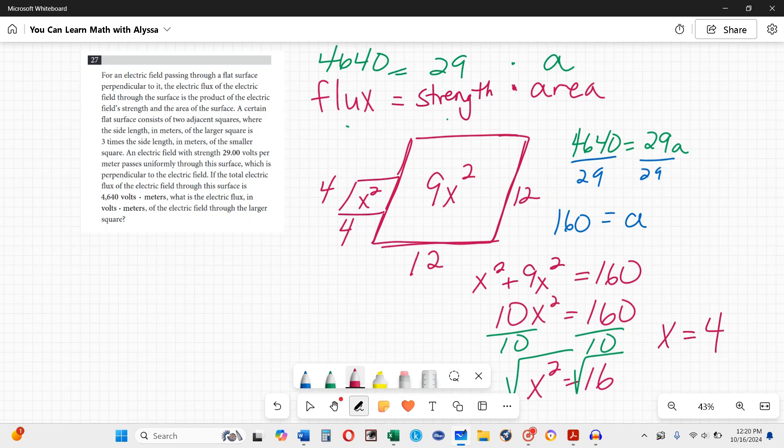Now I want to know the electric flux going through the larger field. Flux equals strength times area. I know my strength is 29 and my area is 12 times 12, or 144. If I multiply those together, I get 4176 and that is my flux. That is one way to do it. It is perfectly valid and that is the right answer, 4176.